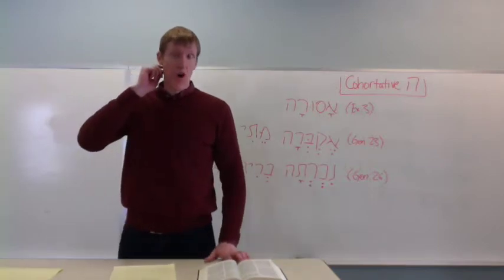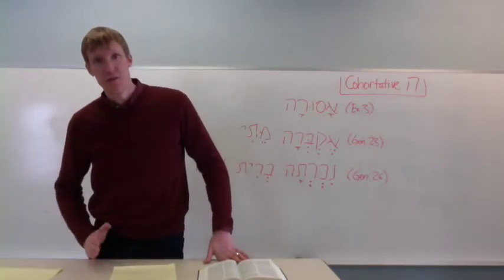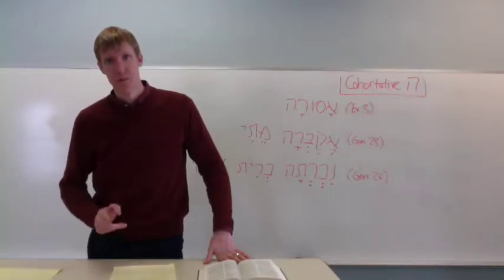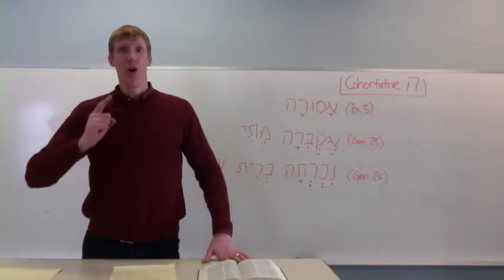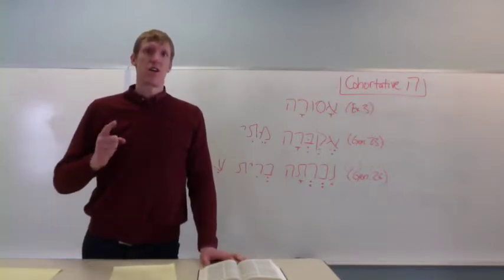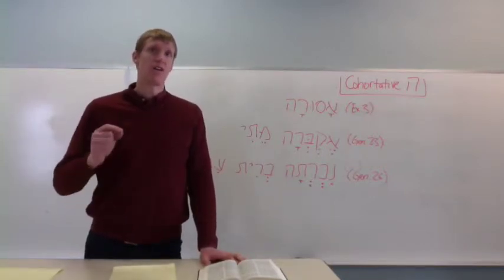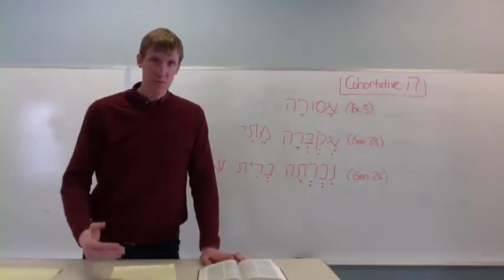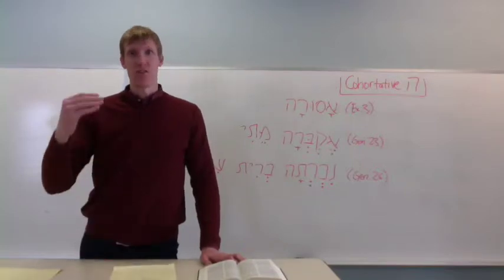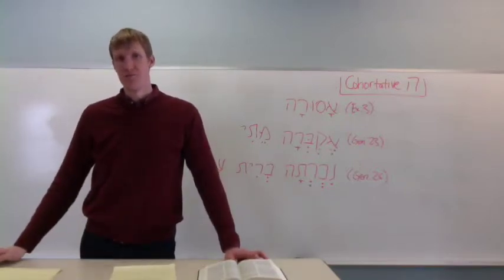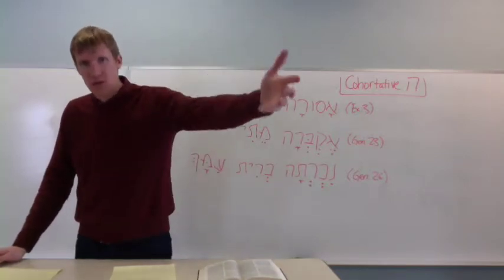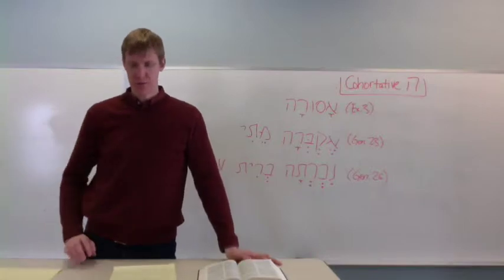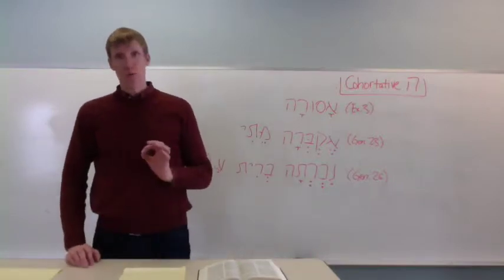The cohortative only happens in first-person imperfect verbs. I'm going to repeat that. The cohortative only occurs in first-person imperfect verbs. So verbs with a prefix, either first-person singular or first-person plural. I will do something or we will do something. Those kinds of verbs. That's very important to keep in mind.